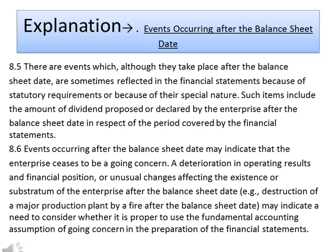Paras 8.6: Events occurring after the balance sheet date may indicate that the enterprise ceases to be a going concern. A deterioration in operating results and financial position or unusual changes affecting the existence or substratum of the enterprise after the balance sheet date may indicate a need to consider whether it is proper to use the fundamental accounting assumption of going concern in the preparation of the financial statements.